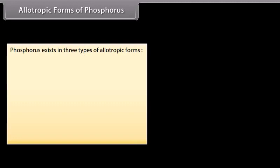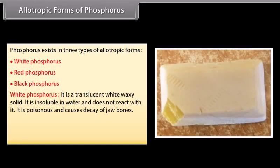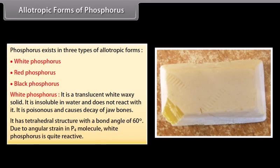Phosphorus exists in three types of allotropic forms: white phosphorus, red phosphorus and black phosphorus. White phosphorus is a translucent white waxy solid; it is insoluble in water and does not react with it. It is poisonous and causes decay of jaw bones. It has a tetrahedral P4 structure with a bond angle of 60°. Due to angular strain in the P4 molecule, white phosphorus is quite reactive.